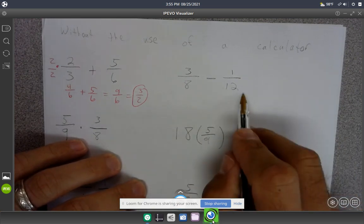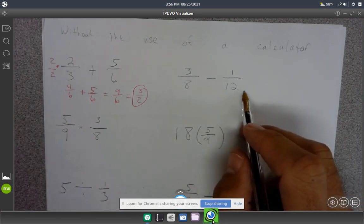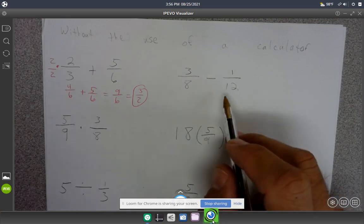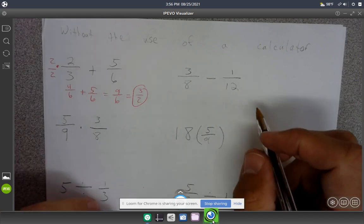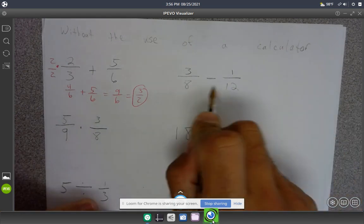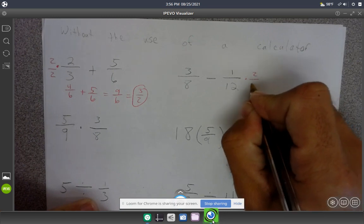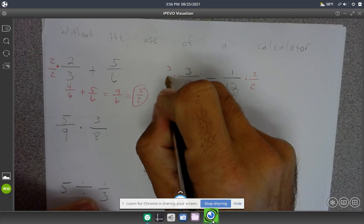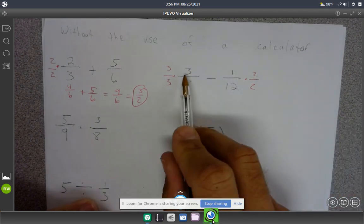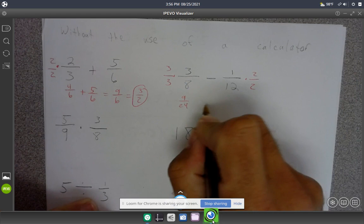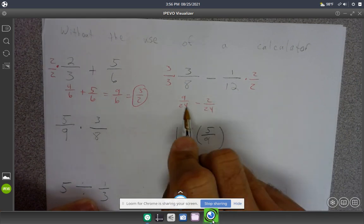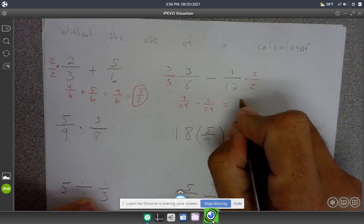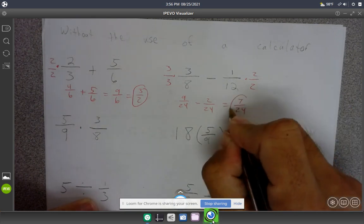The common denominator for 8 and 12 is 24. You could do 8 times 12, but that's bigger than needed. To make these into 24, I multiply this one by 2/2 and this one by 3/3. That gives me 9/24 minus 2/24. Subtract those and you get 7/24.